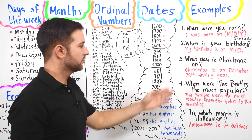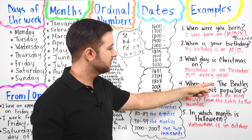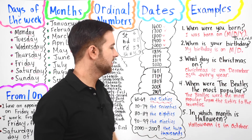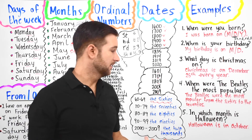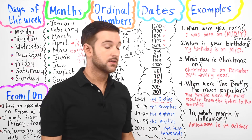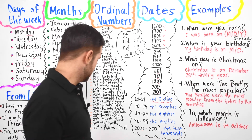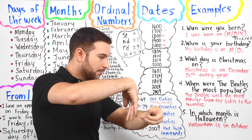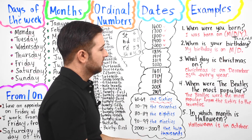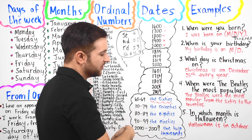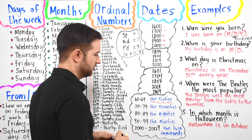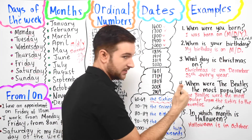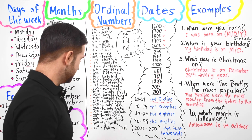Number three: What day is Christmas on? Christmas is on December 25th — every year, 2001, 2002, 2003, on and on. Number four: When were the Beatles most popular? The Beatles were most popular from the 60s to the 70s. Number five: In which month is Halloween? Halloween is in October.